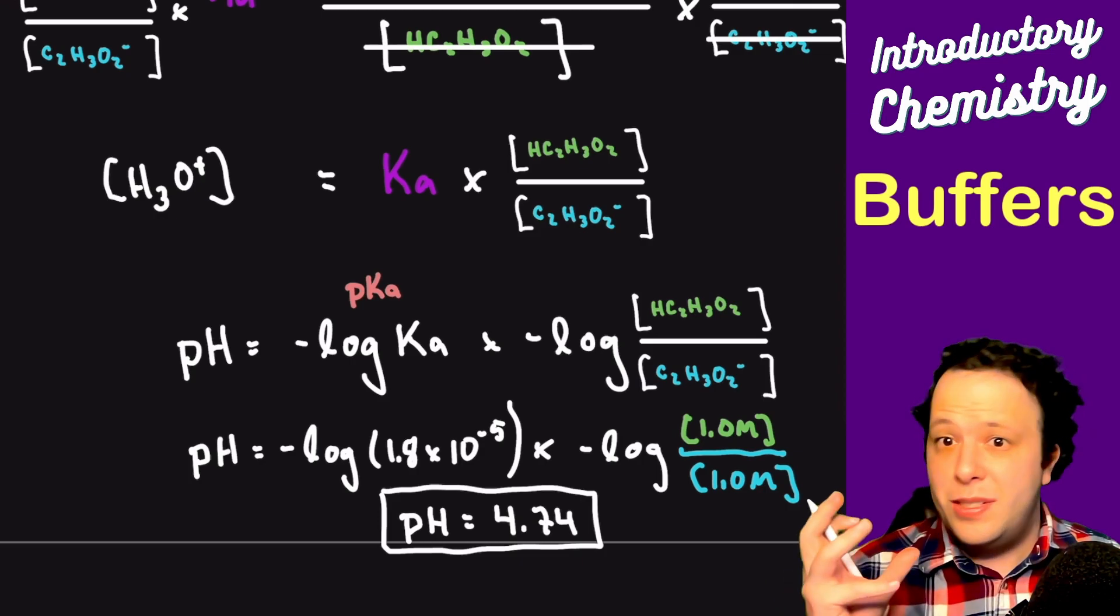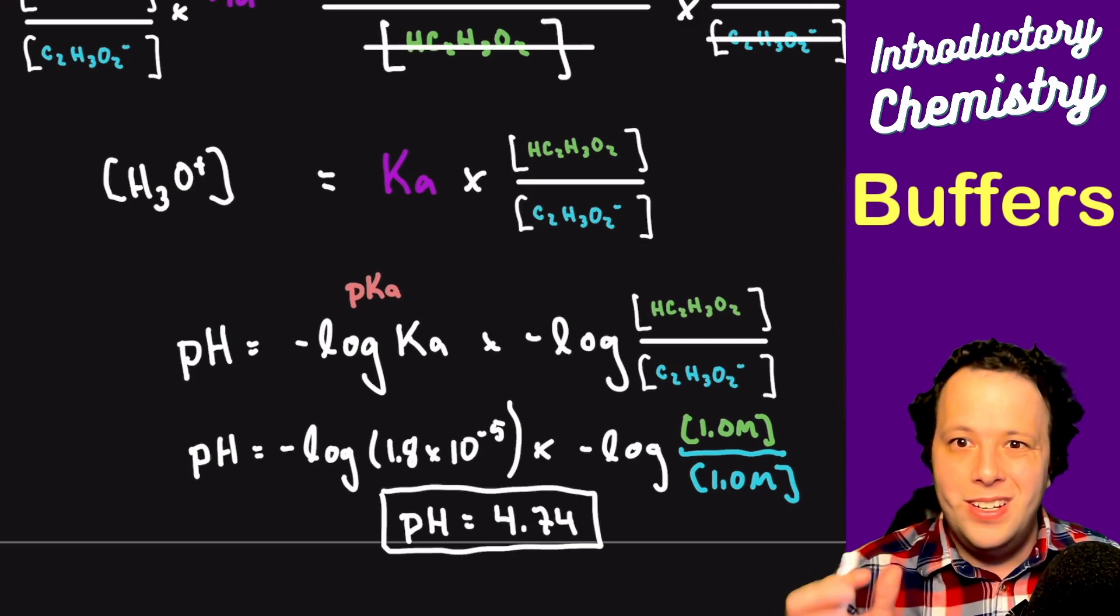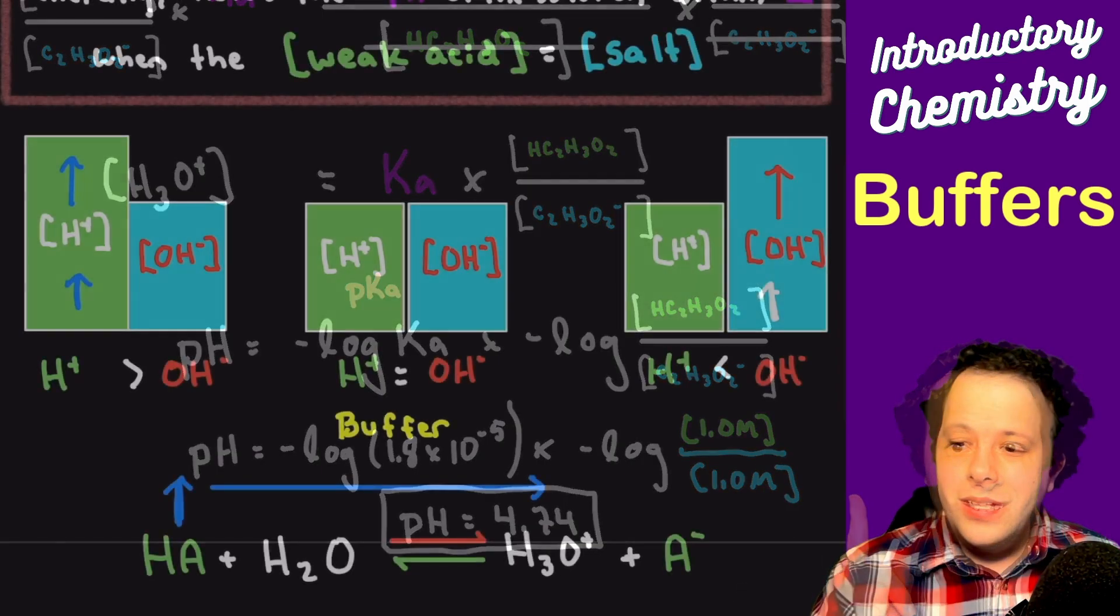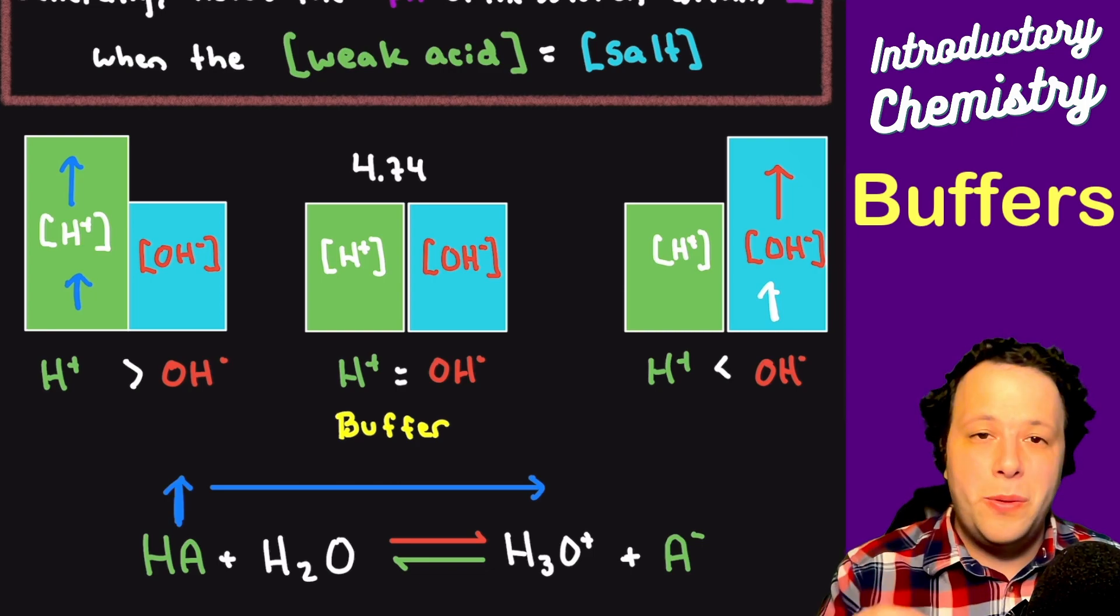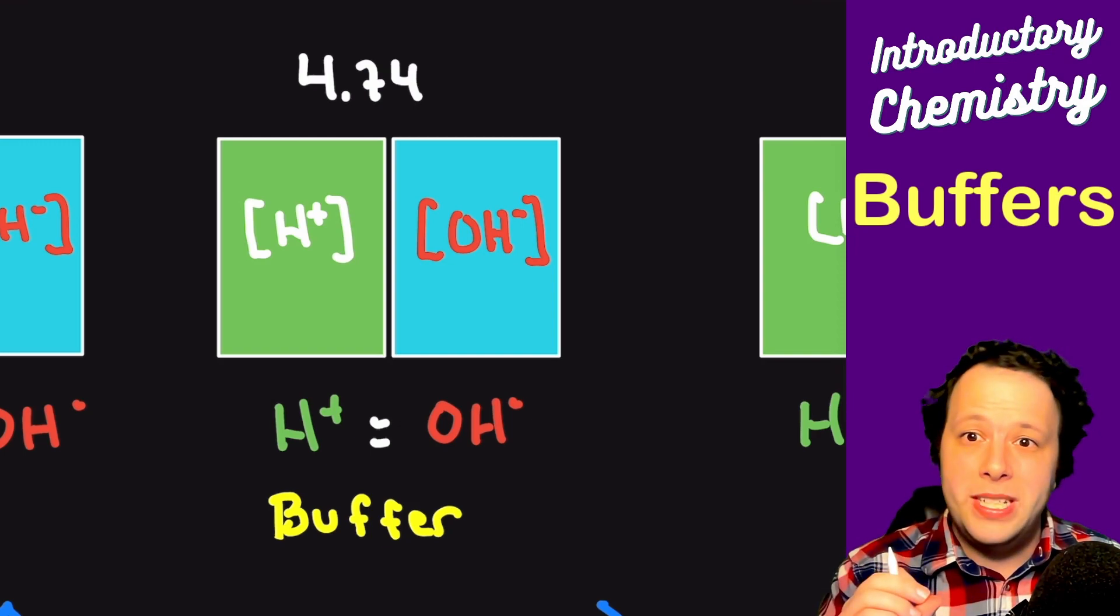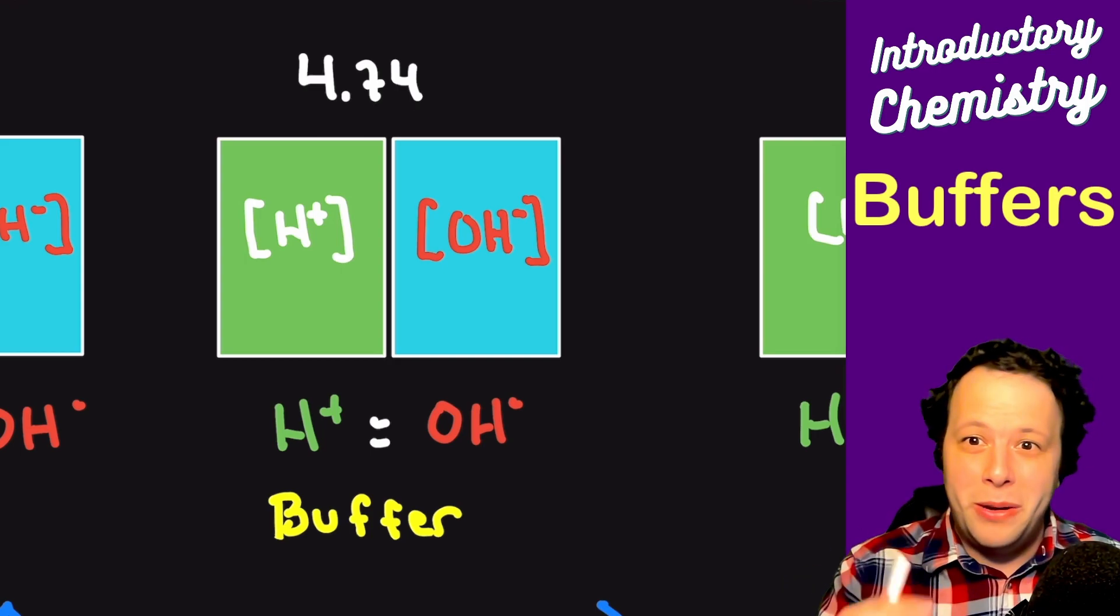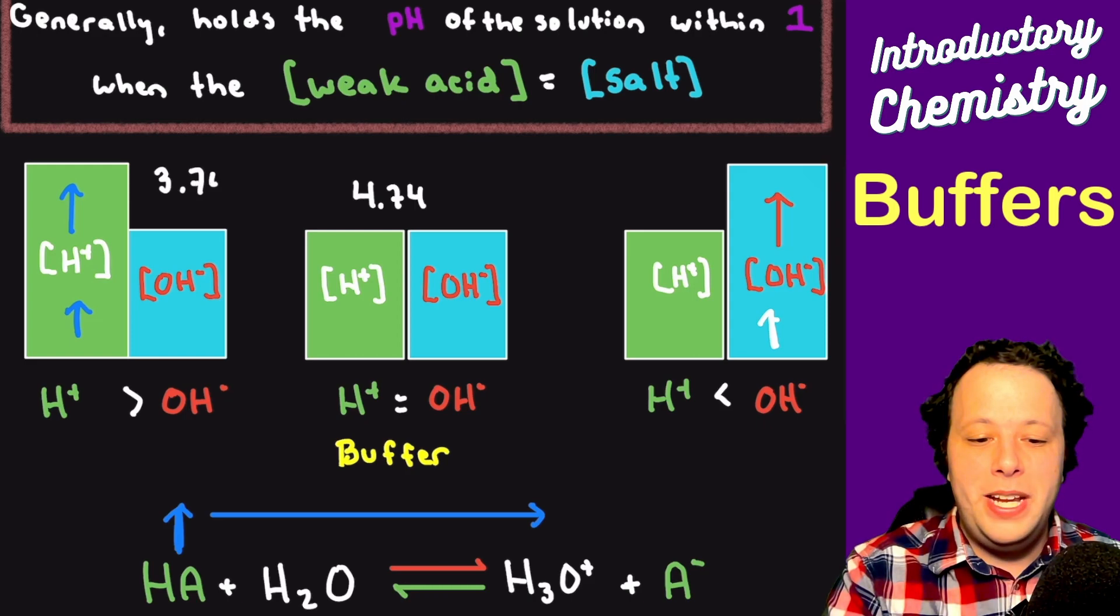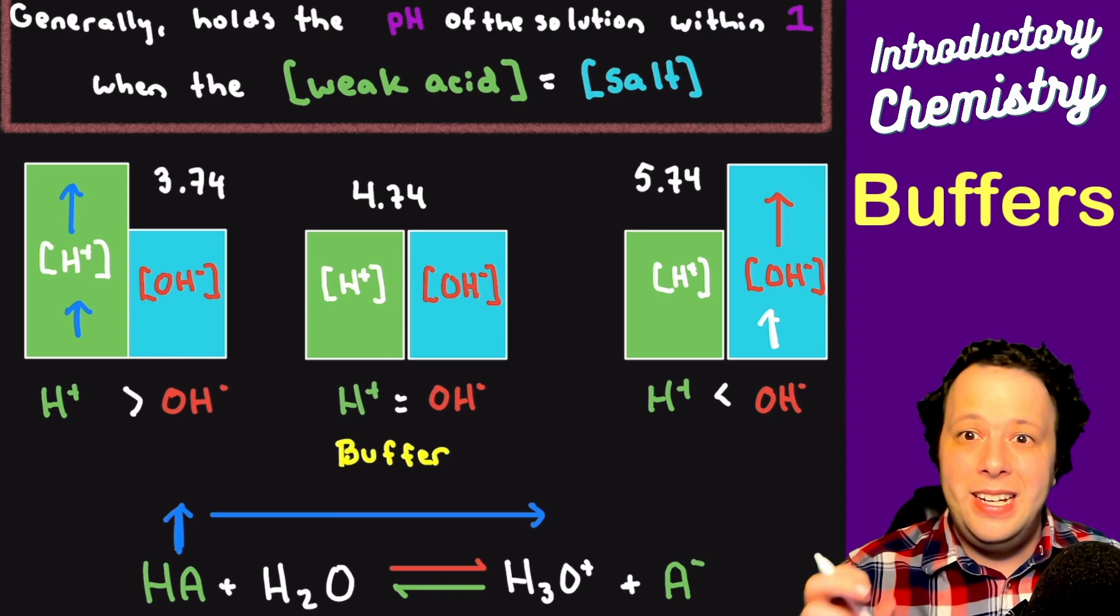So if you had acetic acid as a buffer, it would be able to maintain a pH right around 4.74. To go back to the example I had earlier, if the concentrations were equal to each other, which is what we had, the buffer would be able to hold right around 4.74. So it could either increase the pH by 1 or decrease it by 1. Within our buffer capacity, it could hold the pH from anywhere from 3.74 all the way to 5.74 in order to maintain it within a pH of 2.